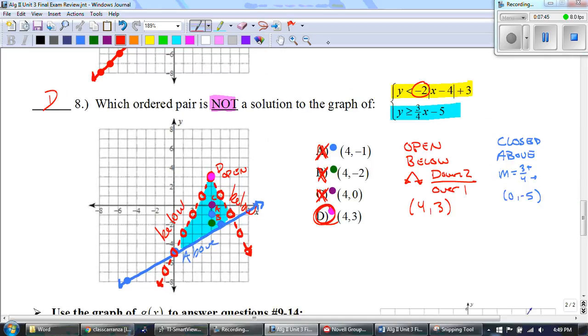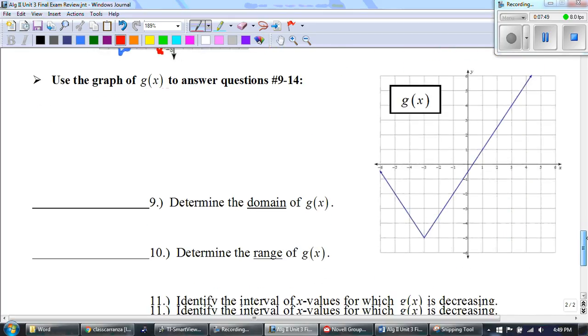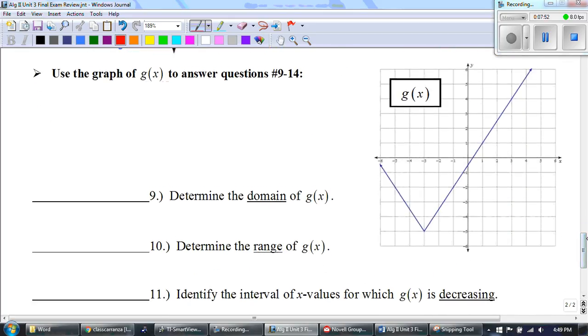Alright, last one. Last one, but there are like 50 questions. Use the graph of g(x) to answer questions 9 through 14. So determine the domain. Remember that domain are your x values. We're looking for any breaks in the graph from left to right, and there are none. So that means our domain is negative infinity to positive infinity.